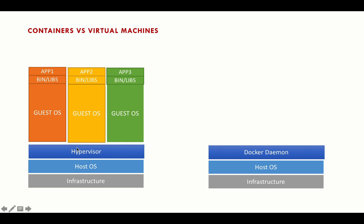With VMs we had a hypervisor, which was a piece of software virtualizing the hardware. But the Docker daemon is software that virtualizes your operating system. With Docker daemon, you don't have to install multiple operating systems. The multiple containers you create all share the same host operating system — whether that's Mac OS or a Linux OS as the host.